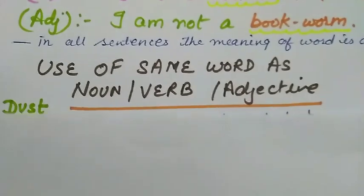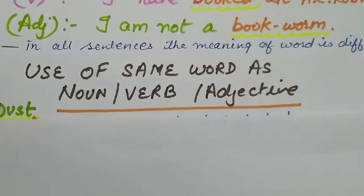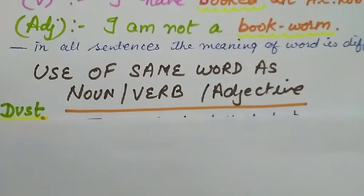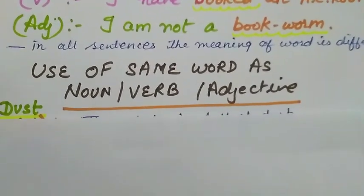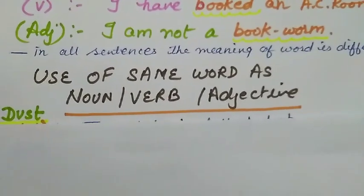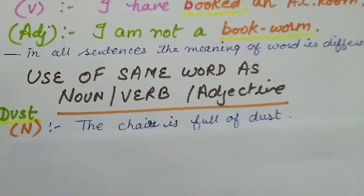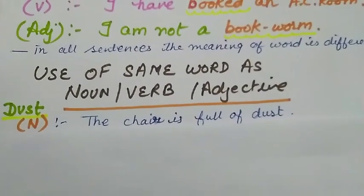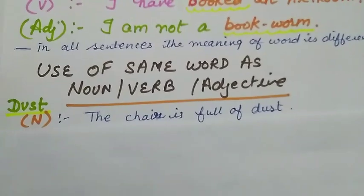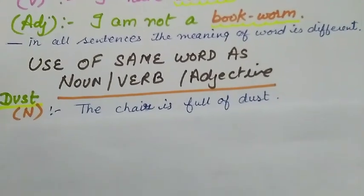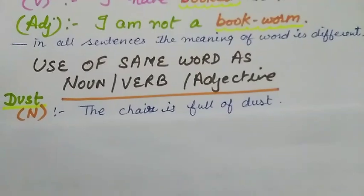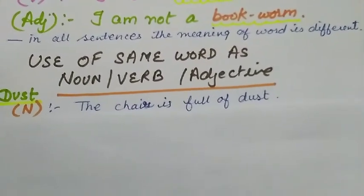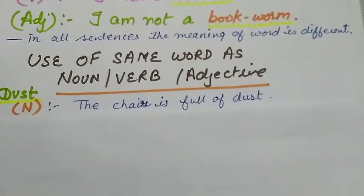Now suppose your word is 'dust.' You have to make sentences using the word dust, using it as a noun first. The chair is full of dust. This sentence uses dust as a noun, meaning the chair has dust on it.